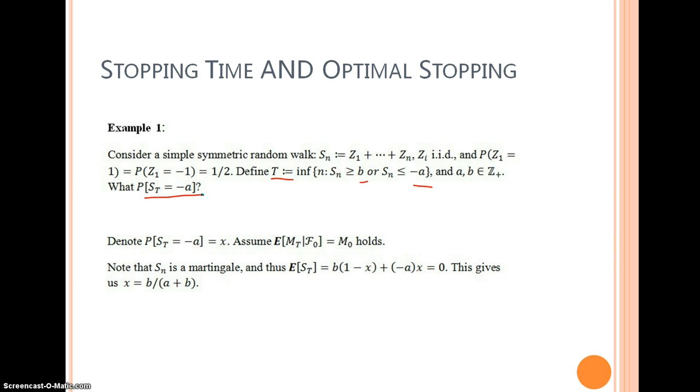If we assume the equation in previous slides hold, and S_n is a martingale, then we can rewrite E[S_t] in terms of the probability of the hitting time and let it equal to 0. So this gives us the probability of the process to hit the lower threshold. It is b divided by a plus b.